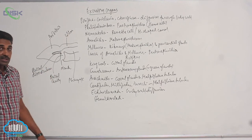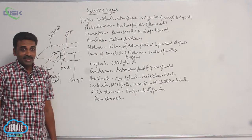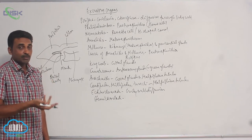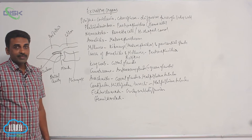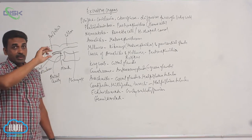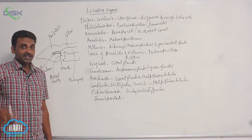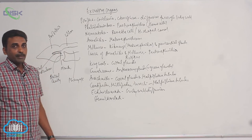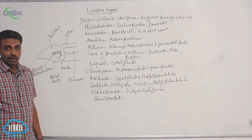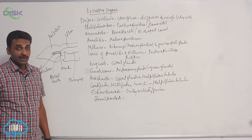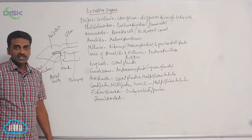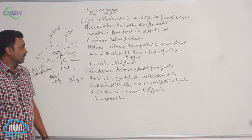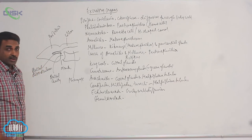Previously, the buccal diverticulum was thought to be a notochord — at one point it was supposed to be a notochord. The word hemichordate means half-chordate, referring to this small notochord-like structure they thought it was. But today we know it is not related to the notochord. The notochord originates from embryonic mesoderm, but this buccal diverticulum originates from ectoderm, because the buccal cavity is lined by ectoderm. So their embryonic origin is different.